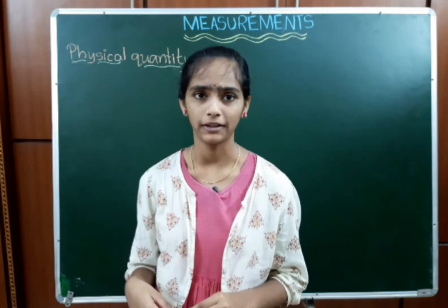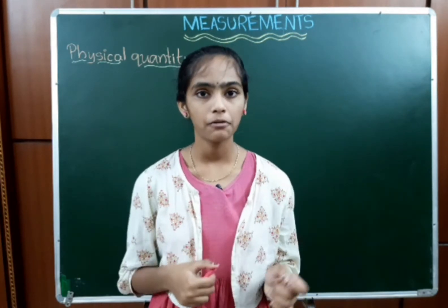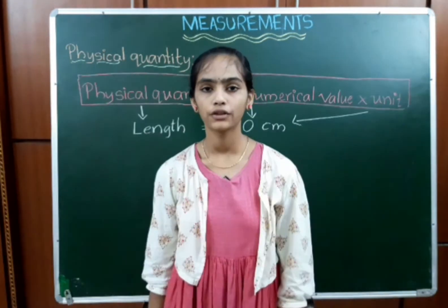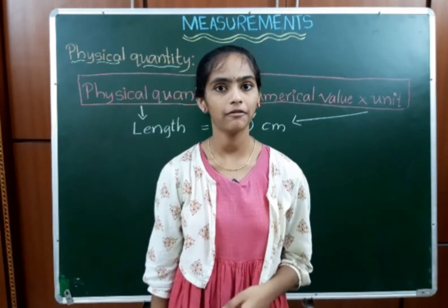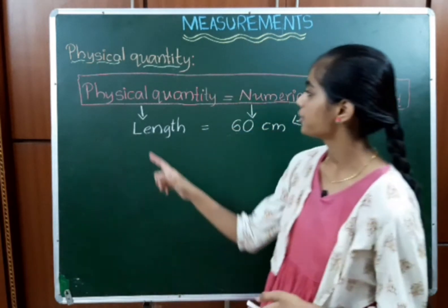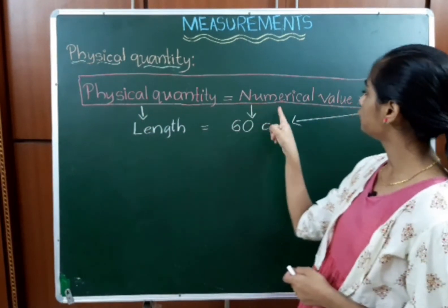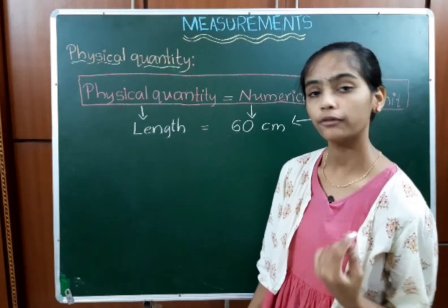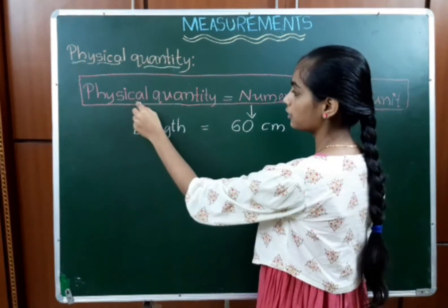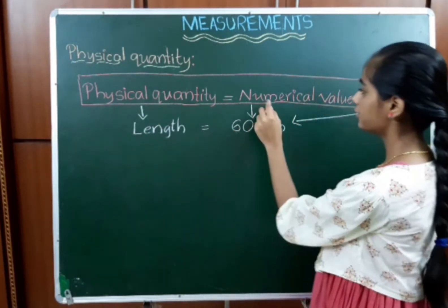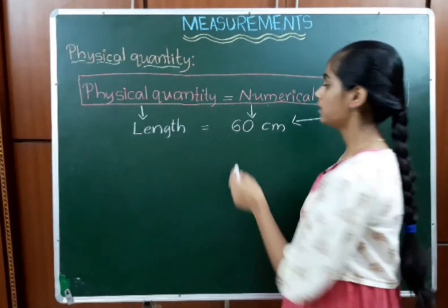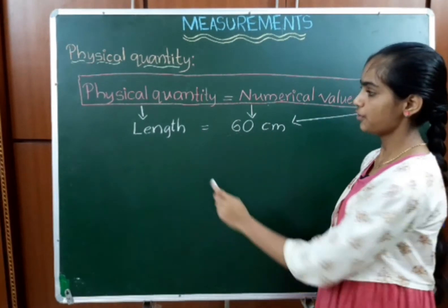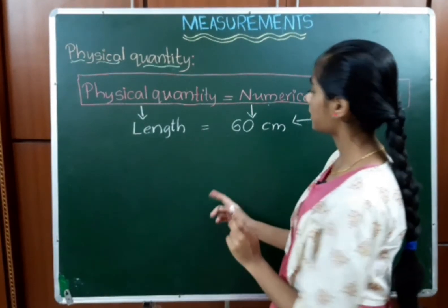We have a formula for it: Physical quantity is equal to numerical value multiplied by unit. For example, if the physical quantity is length, we can take a numerical value of 60 and the unit as centimeters. So length equals 60 centimeters.